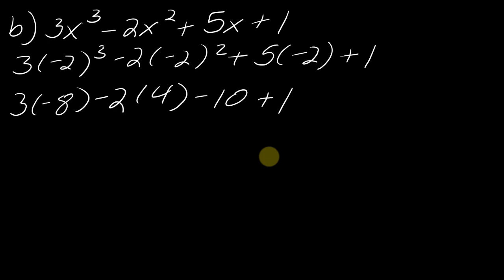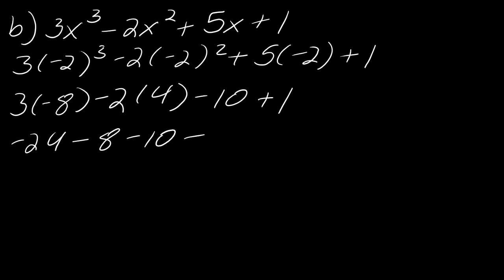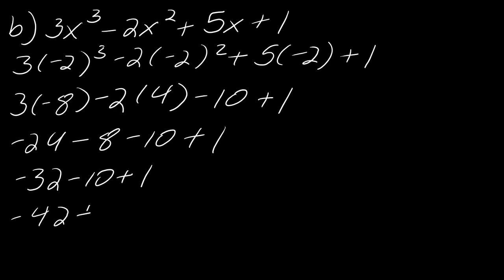This is really just an order of operations exercise at this point — I do have a review video on that if you're rusty. So 3 times negative 8 is negative 24, minus 8, minus 10, plus 1. Negative 24 minus 8 is negative 32. Negative 32 minus 10 is negative 42, plus 1 gives me negative 41. So that is how we evaluate a polynomial.